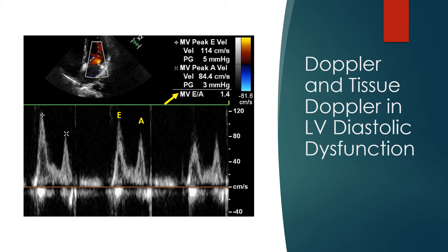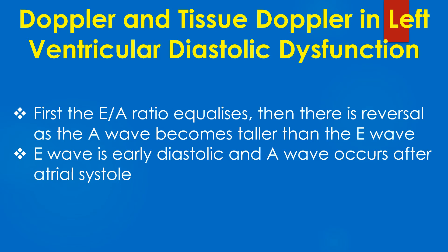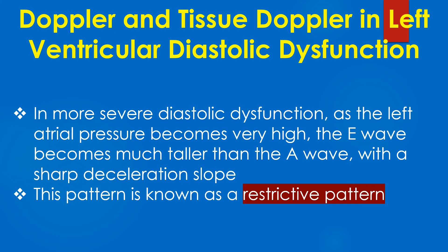Though the E by E prime ratio is increased in this case, there is no E by A reversal, which is the more commonly used indicator of LV diastolic dysfunction. When the E by A ratio is used, there could be several grades of LV diastolic dysfunction. First, the E by A ratio equalises. Then there is reversal as the A wave becomes taller than the E wave. E wave is early diastolic and A wave occurs after atrial systole. In more severe diastolic dysfunction, as the left atrial pressure becomes very high, the E wave becomes much taller than the A wave with a sharp deceleration slope. This pattern is known as the restrictive pattern.